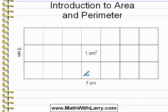And that's why we can say that the area of this rectangle is 21 centimeters squared, or 21 square centimeters. The area inside is comprised of 21 squares that are each 1 centimeter by 1 centimeter.